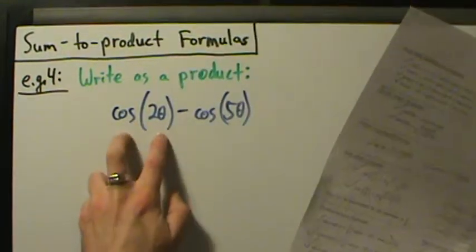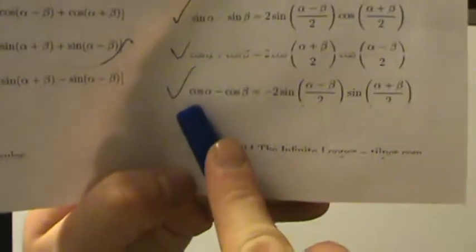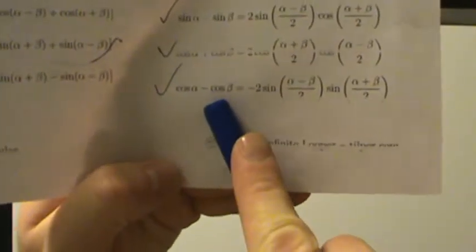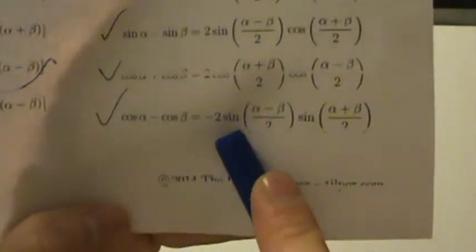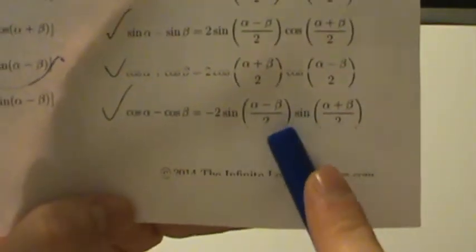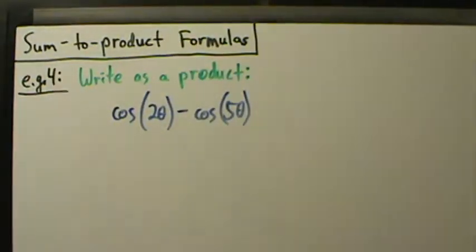We have cosine of something minus cosine of something else, so we're going to use the fourth formula: cosine alpha minus cosine beta equals negative two sine of (alpha minus beta) over two, times the sine of (alpha plus beta) over two.